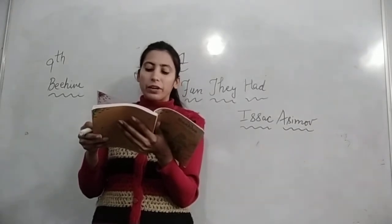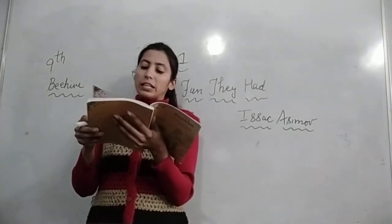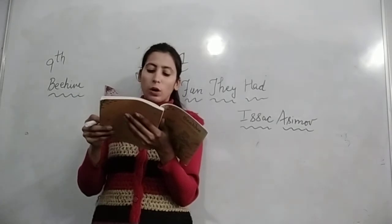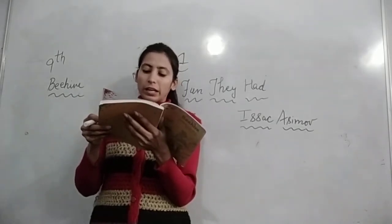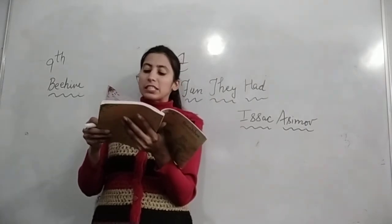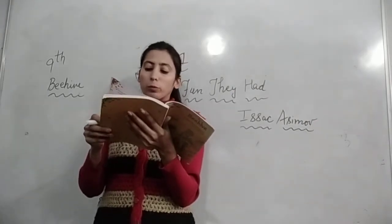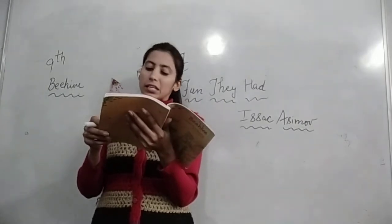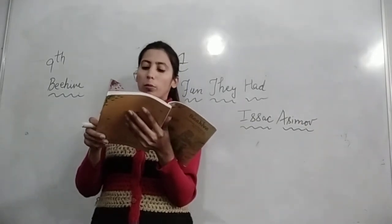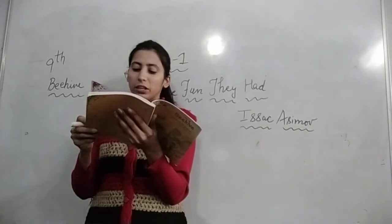She was thinking about the old school they had when her grandfather's grandfather was a little boy. Margie का ध्यान पुराने school के बारे में था — जब उनके grandfather के grandfather छोटे बच्चे थे. All the kids from the whole neighborhood who came laughing and shouting in the school yard, sitting together in the classroom. वो सोच रही थी कि सारे बच्चे, पड़ोस के भी बच्चे, हँसते-चिलाते school में आते थे, एक साथ classroom में बैठते थे. Going home together at the end of the day. They learned the same thing so they could help one another with the homework and talk about it. And the teachers were people.